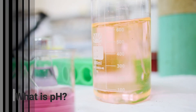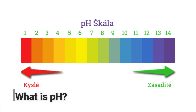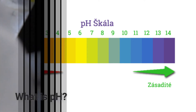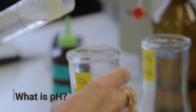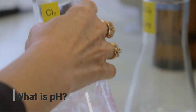Acidity or pH is a number expressed in chemistry indicating whether an aqueous solution reacts acidic or basic. For aqueous solutions, the acidity level ranges from 0 to 14. Chemically pure water has a pH of 7, so it is neutral. If the pH is less than 7, there are acids; if higher, there are bases.